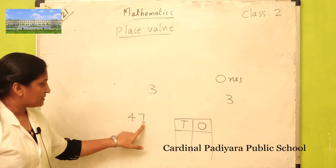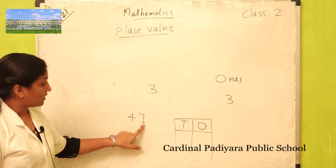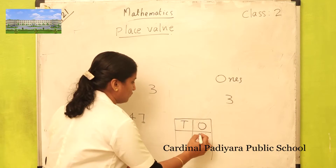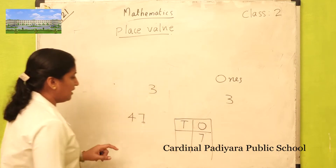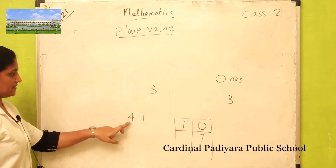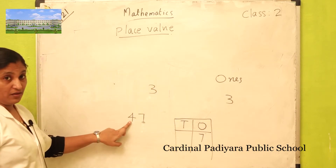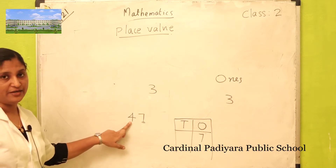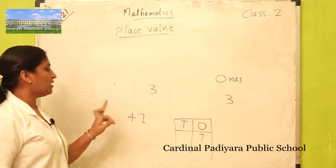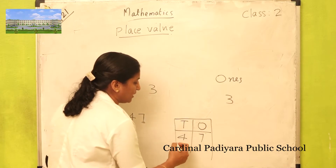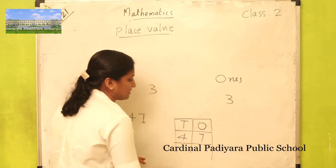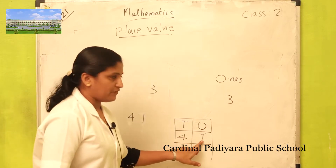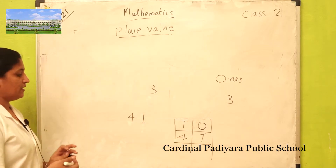Which number is in ones place? Seven. Seven is in ones place. How many tens in forty-seven? Four tens. Four tens and seven ones is forty-seven.